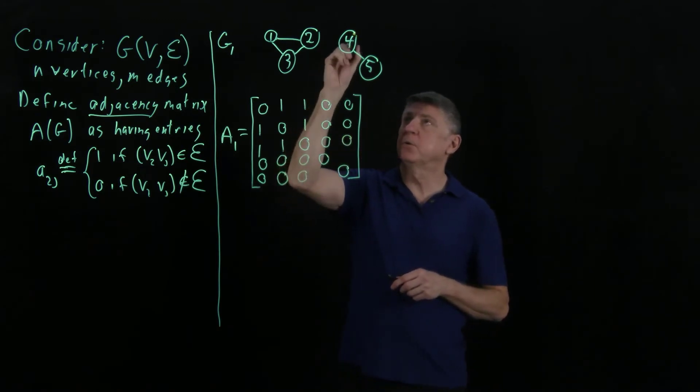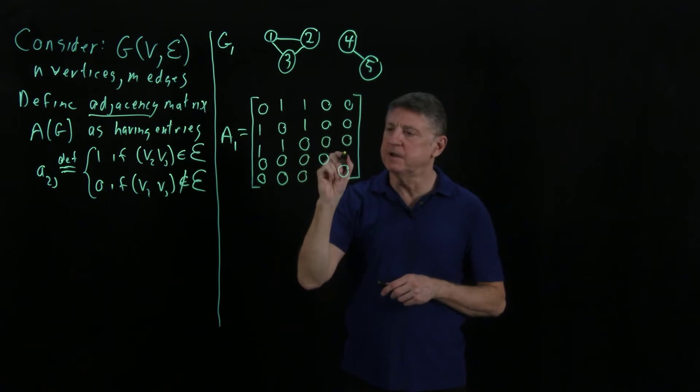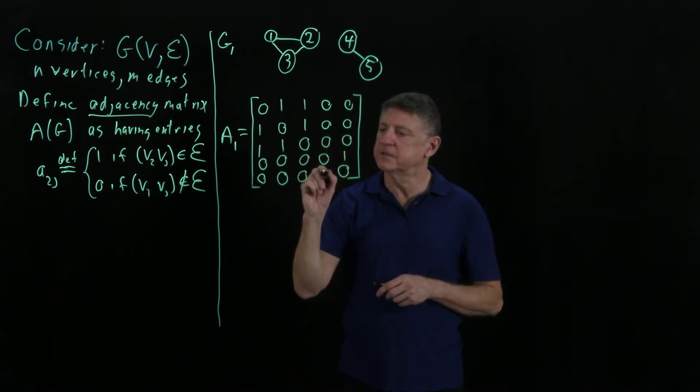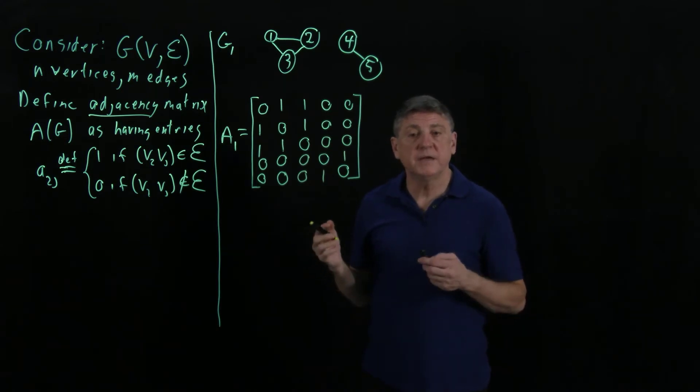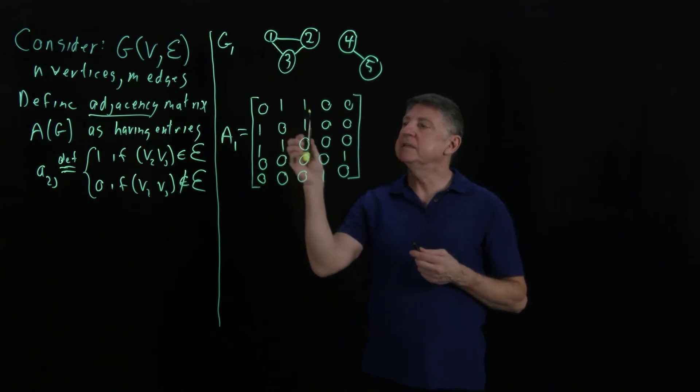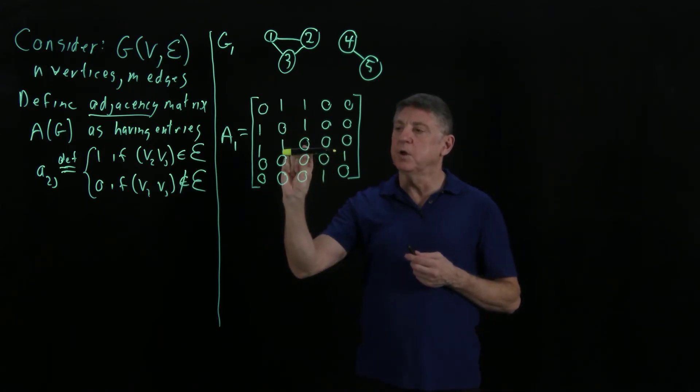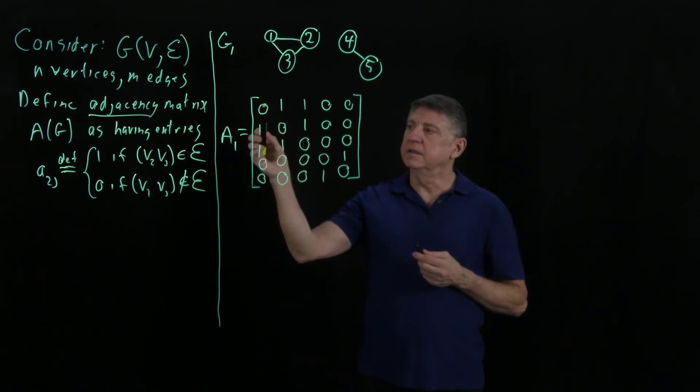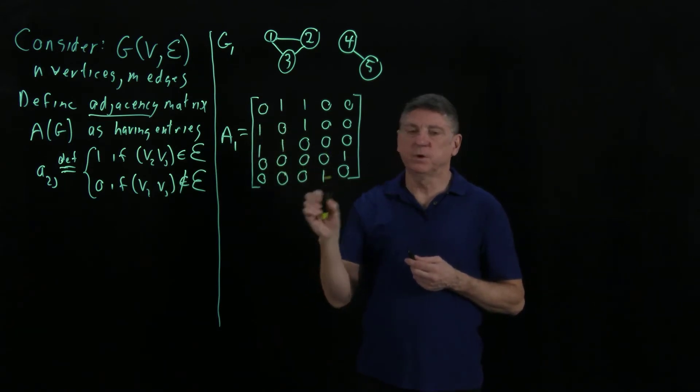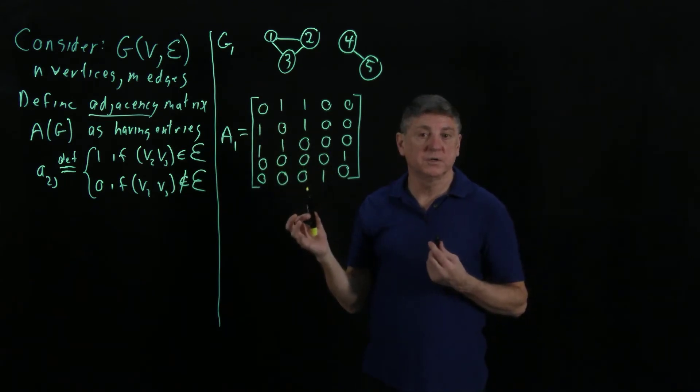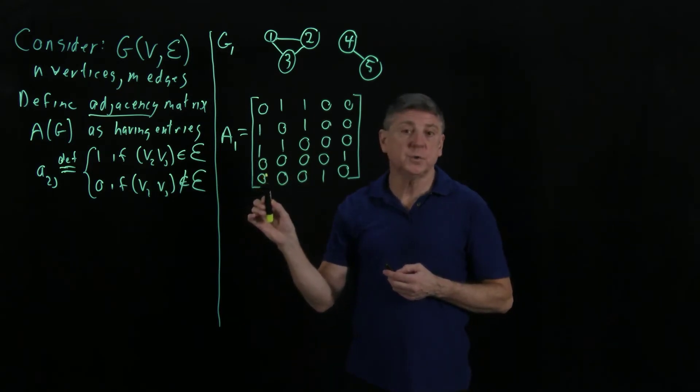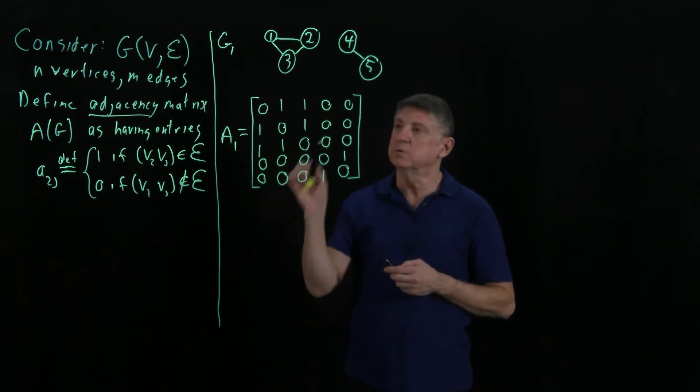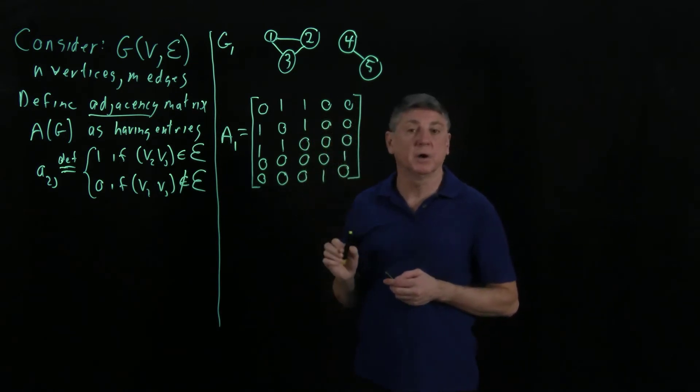And then vertex 4 is connected to vertex 5. And vertex 5 is connected to vertex 4. And so we have the adjacency matrix. We can make a simple observation, which is we can see that this is partitioned into two blocks. And this block and this block are non-zero matrices. And then this is a non-square block of zeros. And this is a non-square block of zeros.